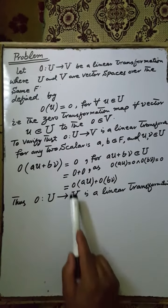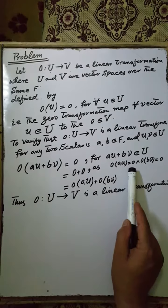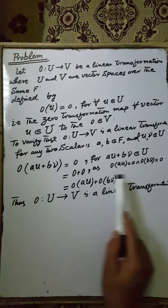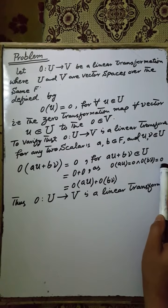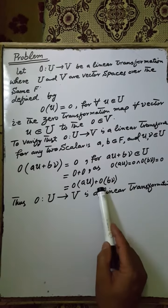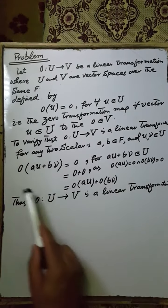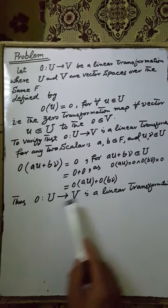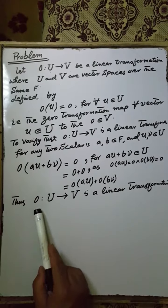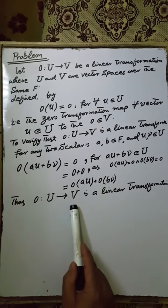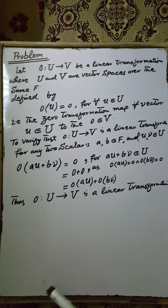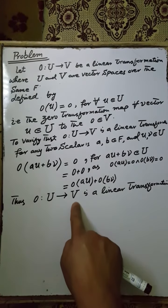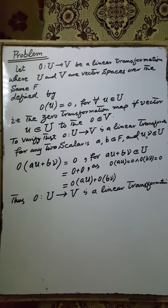According to the given condition, 0(au + bv) can be rewritten as 0(au) + 0(bv), that is 0(au + bv) = 0(au) + 0(bv). Thus, the zero mapping from the vector space U to the vector space V is a linear transformation from U to V over the same field F.